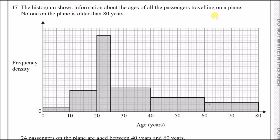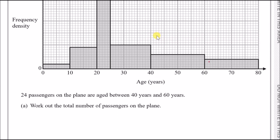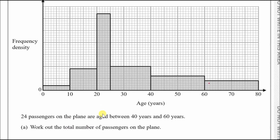Alright, number 17. The histogram shows information about the age of all passengers on a plane; no one is older than 80 years old, so it's limited between 0 and 80. We're told 24 passengers are aged between 40 and 60. That's this block on the histogram — the total area of that rectangle equals 24. We need to work out the total number of passengers, which means finding the areas of all the other blocks. Since we don't know the frequency density heights, we need to figure them out first.